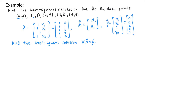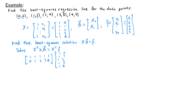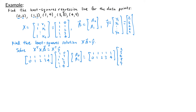To find the least-squares regression line, I want to find the least-squares solution to X times beta equals y by solving the normal equations: X-transpose times X times beta equals X-transpose times y. Computing this gives [5, 10; 10, 30] times [beta-zero, beta-one] equals [26, 71].